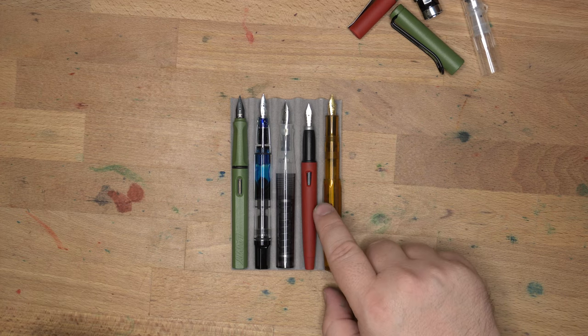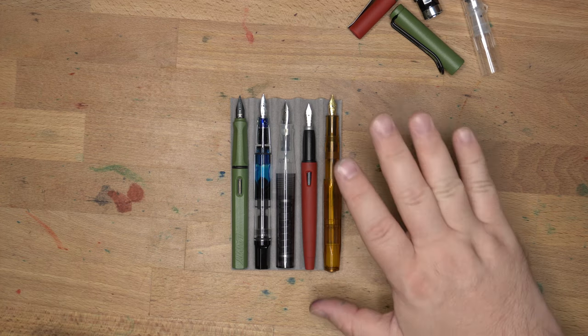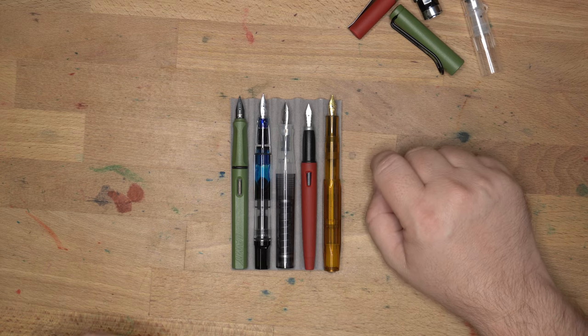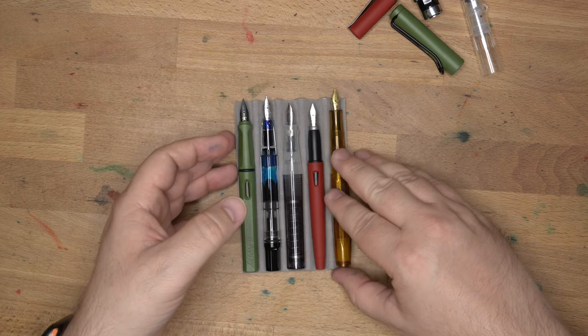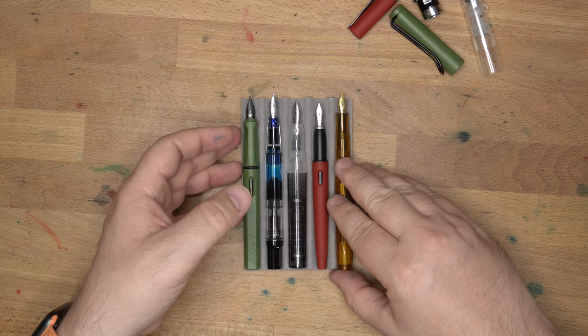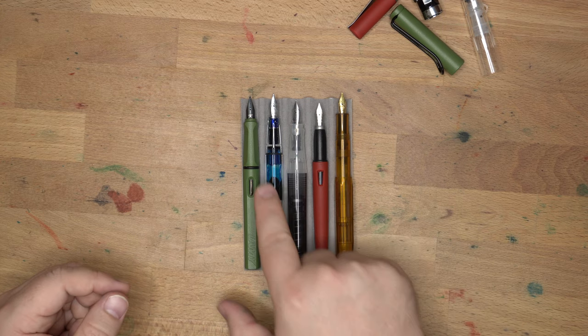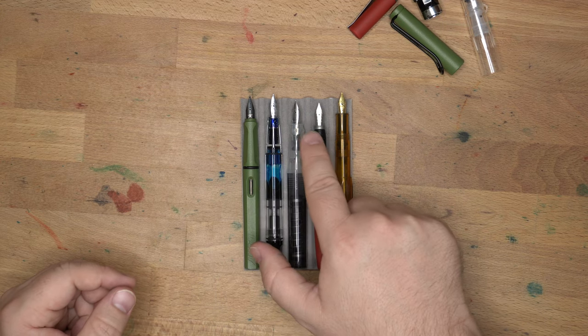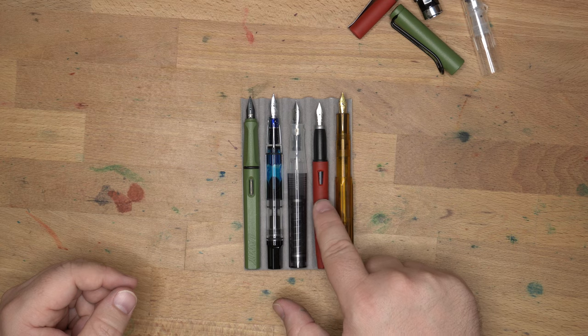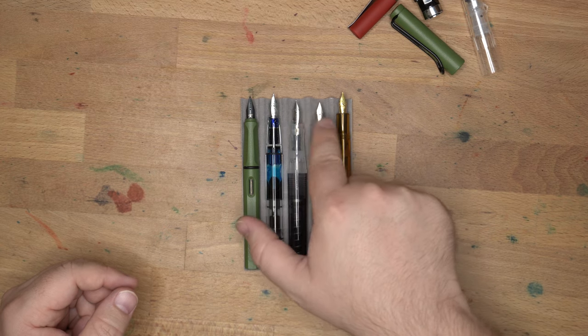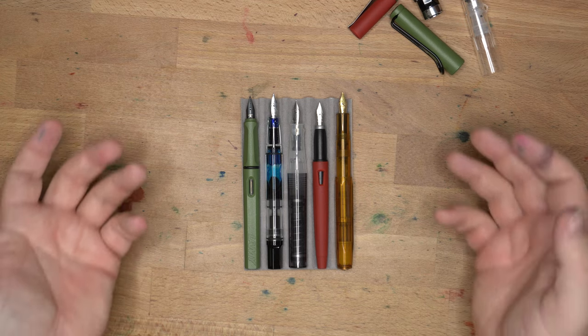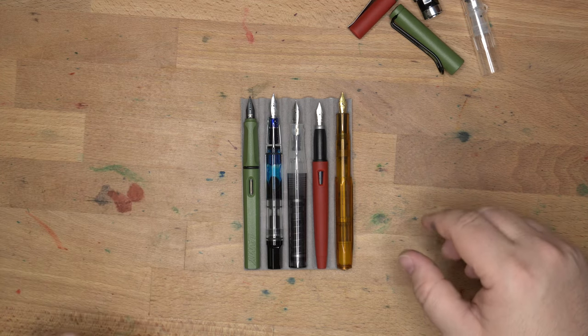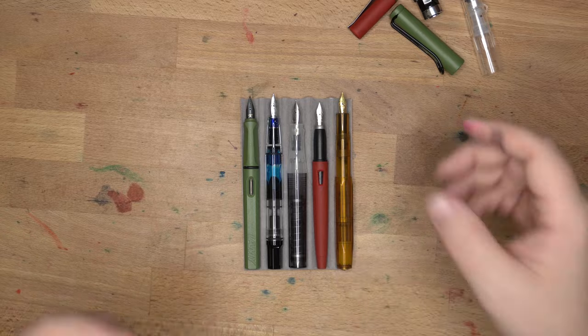because really that's how you're going to write with a Kaweco Sport. My hands are way too big to be writing with an unposted Sport. So, the Sport ends up being a little bit longer than most of these. Let me get this squared up better. There we go. The Go and the Magnum are in the same area, but, you know, within a millimeter or two for all of these. And I think that's a perfectly fine size for writing. I've never had a problem writing with any of these. So, there you have it.